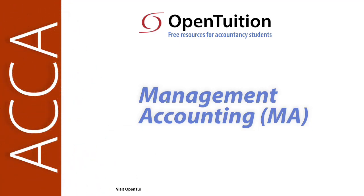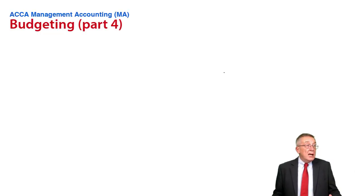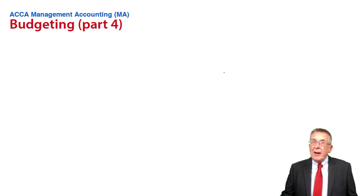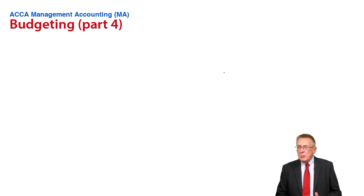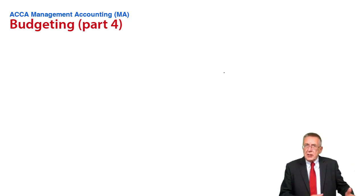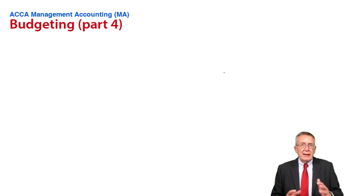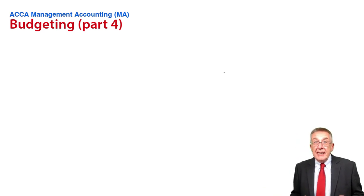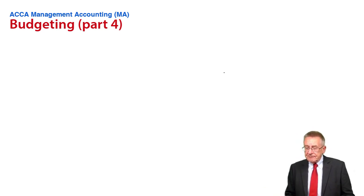This is a lecture from OpenTuition. To benefit from the lecture, you should download the free lecture notes from OpenTuition.com. In the earlier lectures on budgets, we looked very much at the functional budgets — budgeting what the sales will be, and therefore what the production will be, and therefore what labour will be needed, and so on.